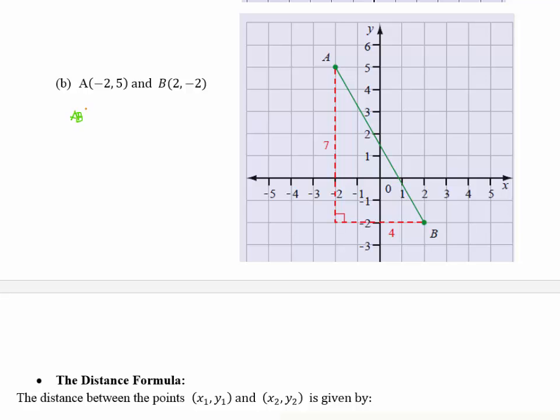So Pythagoras's theorem says that the hypotenuse, which is AB², is equal to one side² plus the other side². If we work this one out, 7² is 49, 4² is 16.